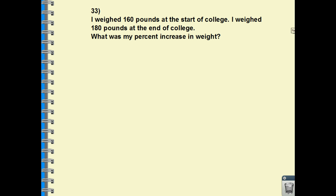Number 33. I weighed 160 pounds at the start of college. I weighed 180 pounds at the end of college. So we see an increase there of 20 pounds. What was the percent increase in weight? So I use the percent of increase formula. We're going to find the difference between what we started with and where we are now. So we have 180 subtracted by 160. We're going to take that and divide it by what we began with, 160 pounds. So we're going to have 20 over 160.